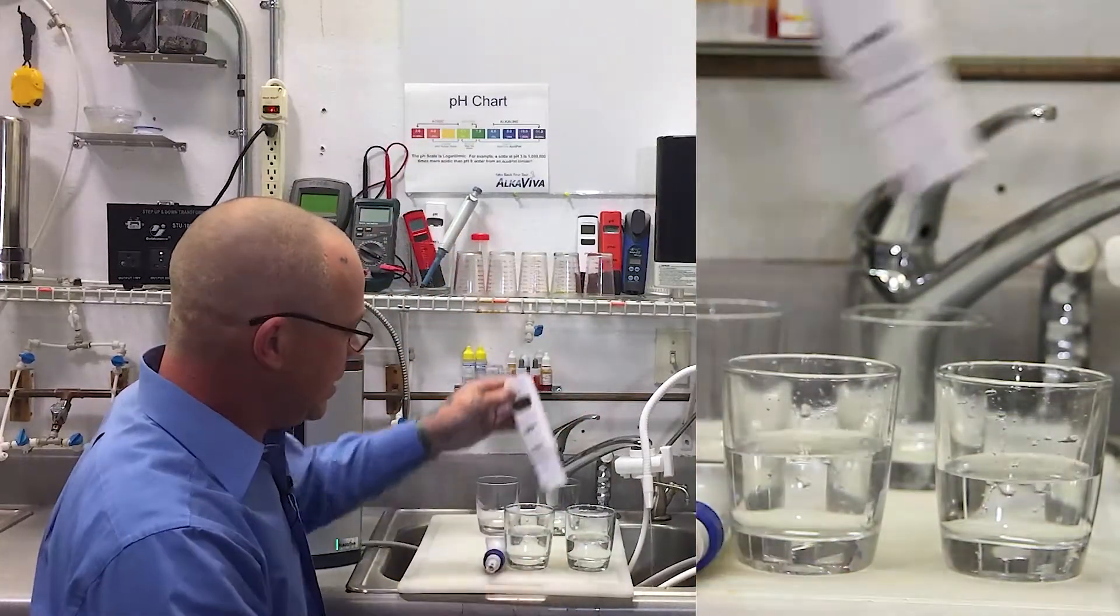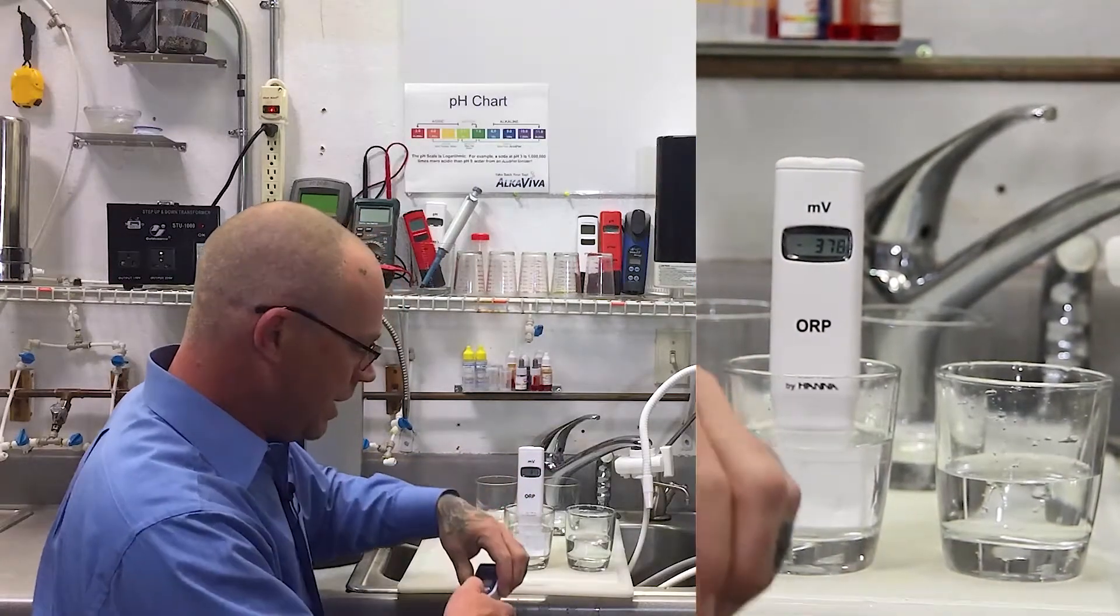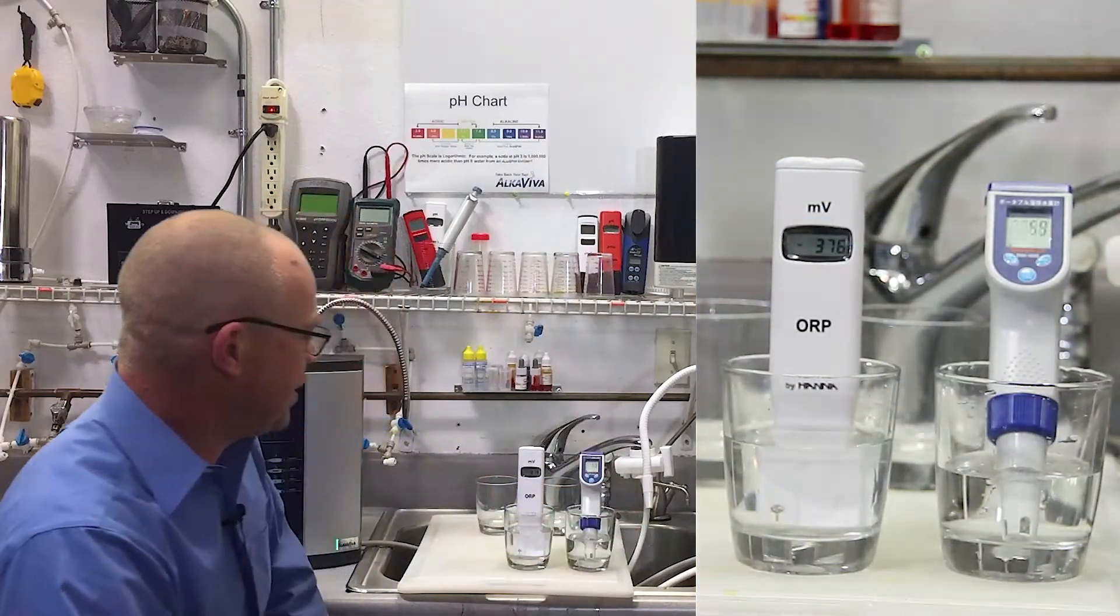We're going to use a digital HANA ORP meter and a digital Truslex H2 meter and see what we're producing here.